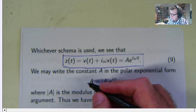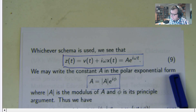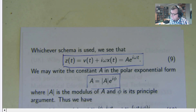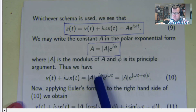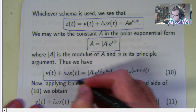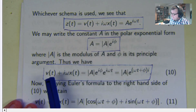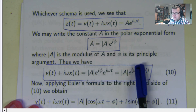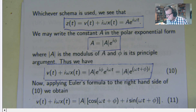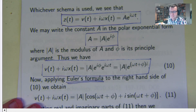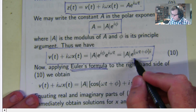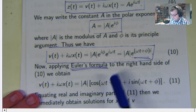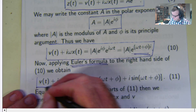The constant A can be written in a polar exponential form, where this is the modulus of A and this is the principal argument — an angle. So let's replace A with this polar form and combine through our exponent laws to get this. Now what we have from that equation is V plus i omega X equals this expression.